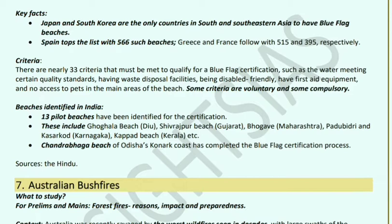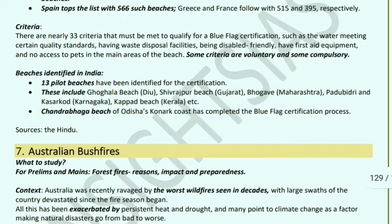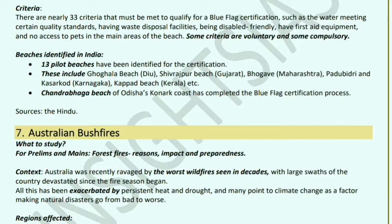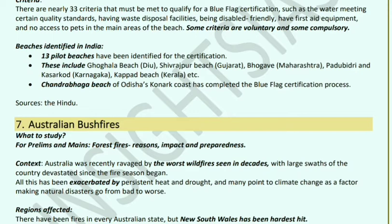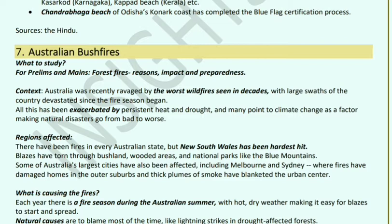Nearly 33 criteria must be qualified for Blue Flag certification, such as water meeting certain quality standards, waste disposal facilities, being disabled-friendly, and having first aid equipment. Some criteria are voluntary and some compulsory. India has 13 pilot beaches identified for certification — including Ghogala Beach in Diu, Shivrajpur Beach in Gujarat, Bhogave in Maharashtra, Padubidri and Kasarkod in Karnataka, Kappad Beach in Kerala, Chandrabhaga Beach in Odisha, and Rushikonda in Andhra Pradesh. Chandrabhaga Beach in Odisha has already completed the Blue Flag certification process.